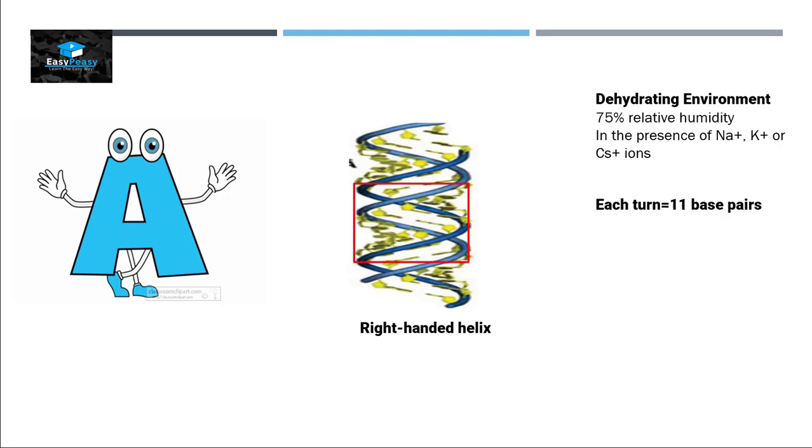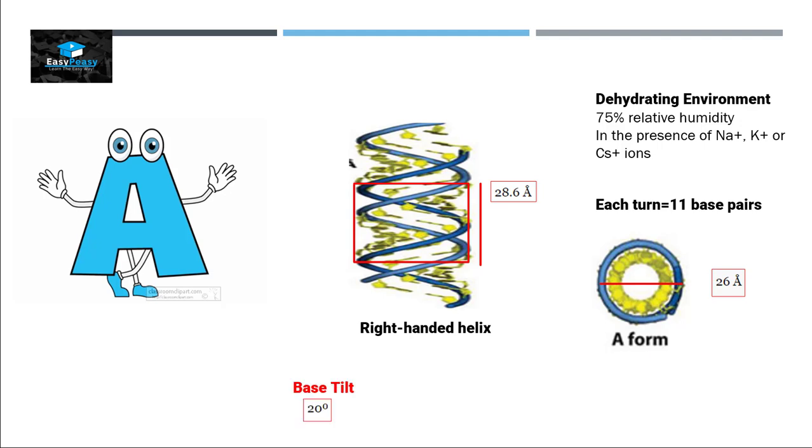The diameter of A form is 26 angstroms, so the diameter of A form is wider than B form. The length of each turn is approximately 28.6 angstroms. The base tilt is approximately 20 degrees, and the helical rise, the distance between two nucleotides, is basically 2.9 angstroms.